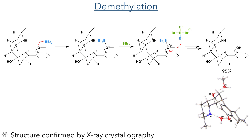Taking this intermediate forward, it was demethylated using boron tribromide. This first coordinates to the oxygen of the aryl ether and then reacts with another equivalent of boron tribromide, forming a boron dibromide activated aryl ether and nucleophilic boron tetrabromide species. It is this tetrabromide that attacks the methyl group and ultimately forms the phenol upon workup. The structure of this product was determined using X-ray crystallography, which confirmed that the desired structure had been formed.